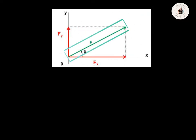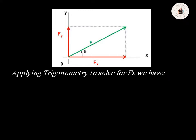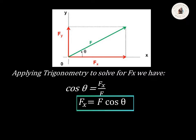Let's say we have a force F that acts upon the given body. This force F has the perpendicular components Fx and Fy. Applying trigonometry to solve for Fx, we have cosine theta equals Fx over F. Cross-multiplying so that we can have an equation for Fx, we have Fx equals F multiplied by cosine theta.